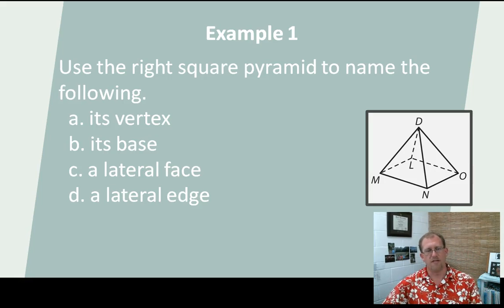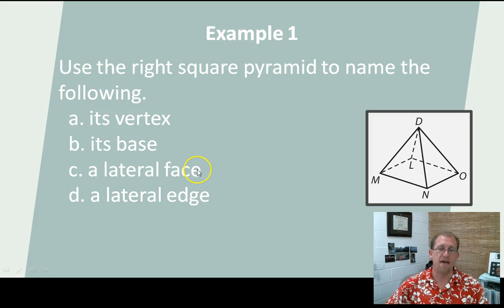Let's do some examples. Use the right square pyramid to name the following. Let's name its vertex. Where do you think the vertex is? Yes, it's point D. The vertex up here is the point in space that all of the edges are connected to. Its base. What's its base? That would be the rectangle down here, LMNO. And the lateral face would be all of these triangles. MDN, NDO, ODL, and LDM. And a lateral edge would be DM, DN, DO, or DL. All of those segments that form the lines of the pyramid's edge. If you have any questions, go back and look over the last couple of slides and hopefully it'll help clear it up.